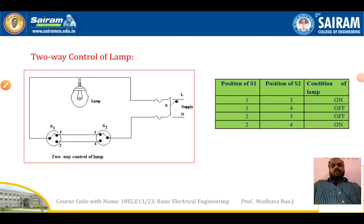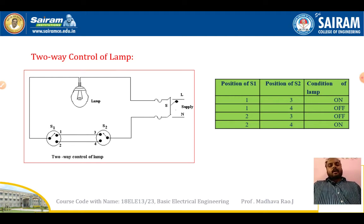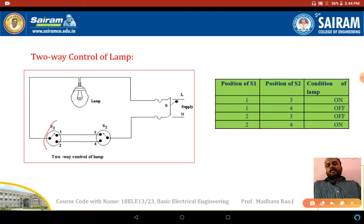In this video we will discuss two-way control of a lamp and three-way control of a lamp — why they are named that way, the circuit, and the truth table showing when the lamp will be on and when it will be off. The first topic is two-way control of lamp. It is named so because one lamp is controlled by using two switches — switch one and switch two.